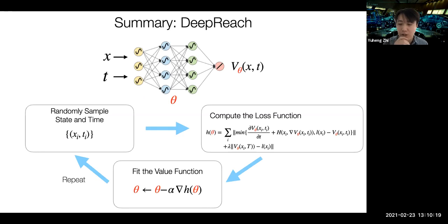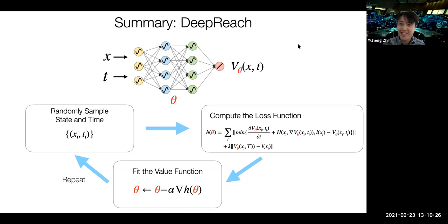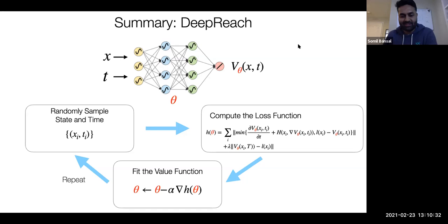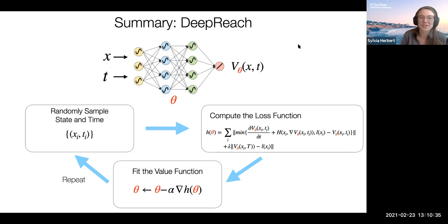A student asks about techniques like batch normalization and dropout. Answer: I don't use them — maybe they'd improve performance, but I don't in this case. Another student asks why sinusoids specifically and not sigmoids or smooth functions. That question will be addressed soon.